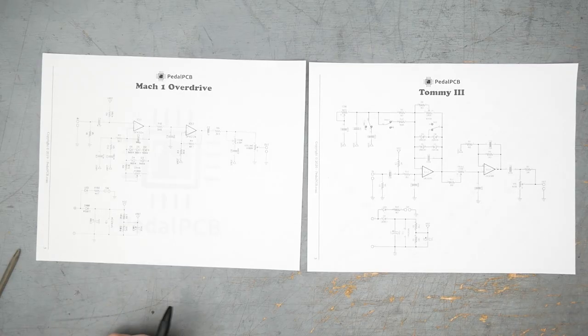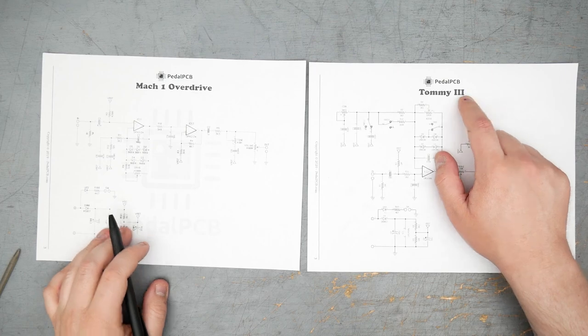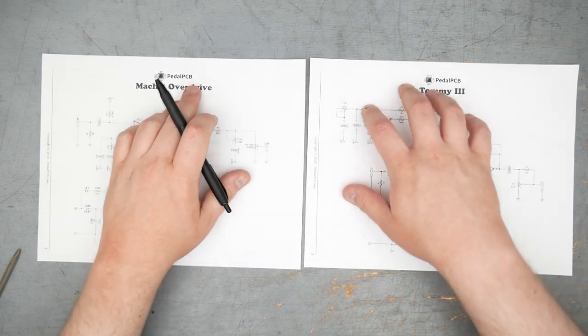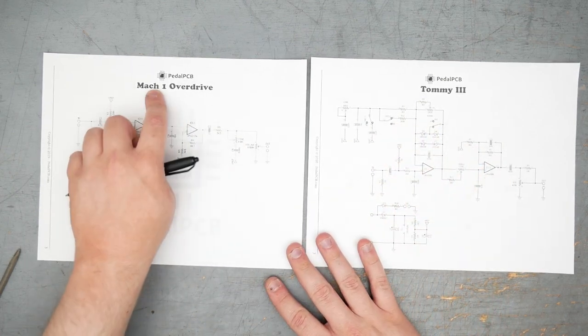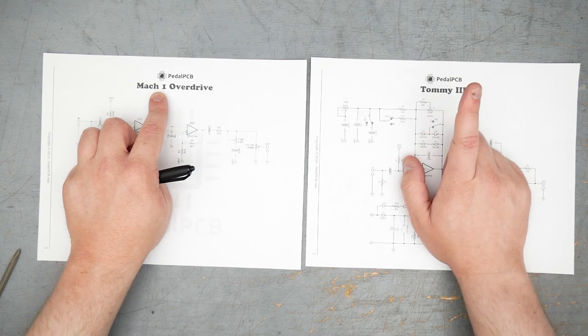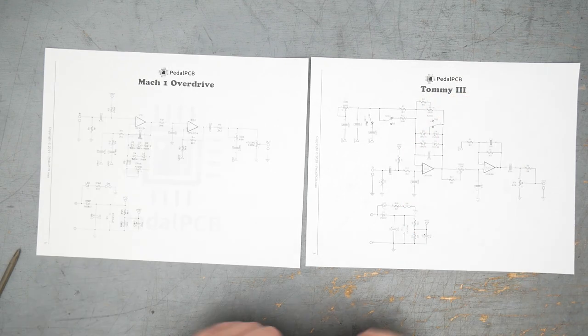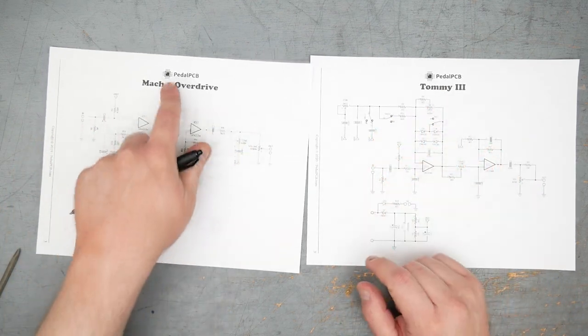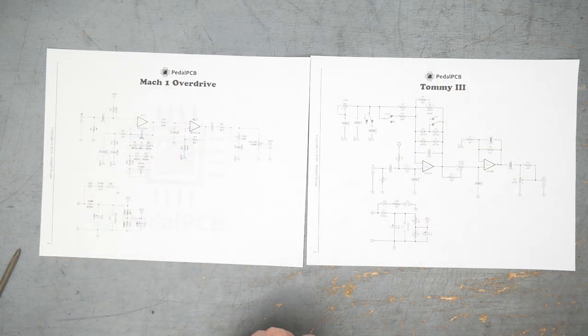All right, I got the schematic here for the Greer Lightspeed and for the Paul Cochran Timmy. This is the version 3 Timmy. These schematics are from Pedal PCB. Pedal PCB makes PCBs for both of these pedals. The Greer Lightspeed is called the Mach 1 Overdrive, and the Paul Cochran Timmy version 3 is called the Tommy 3. So appreciate Pedal PCB drawing up these schematics. If you want to build either of these pedals, go check out the Mach 1 Overdrive or the Tommy 3 PCBs from PedalPCB.com.